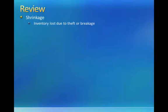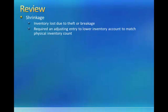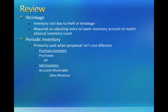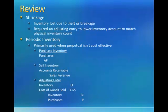In review, we covered shrinkage, which is inventory that is lost due to theft or breakage. Shrinkage requires an adjusting entry to lower the inventory account to match the physical inventory count. The periodic inventory system is primarily used when the perpetual method is not cost effective. When we purchase inventory, we debit purchases and credit accounts payable. When we sell inventory, we debit accounts receivable and credit sales revenue. And we make an adjusting entry before preparing financial statements to debit inventory, debit cost of goods sold, credit inventory, and credit purchases. This wraps up our last inventory module. Now is a good time to practice some of your problems.